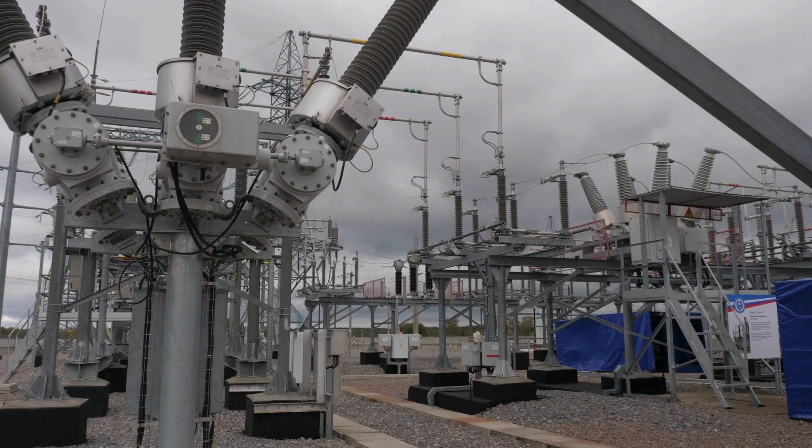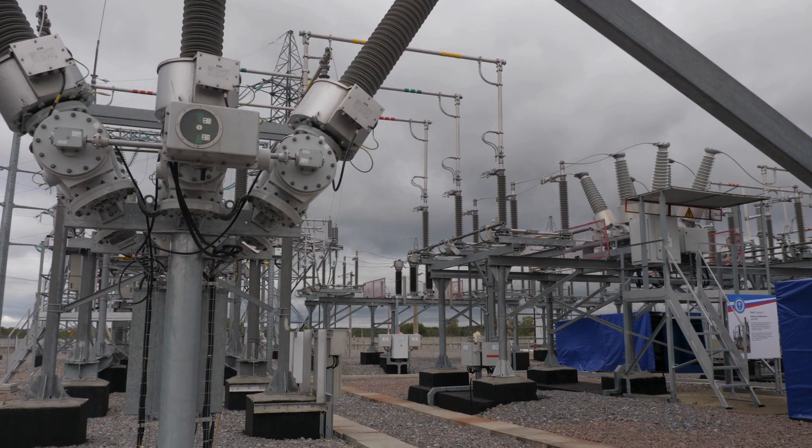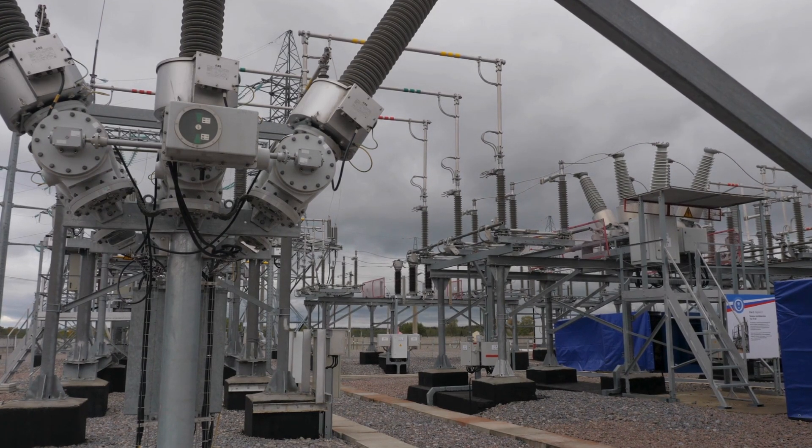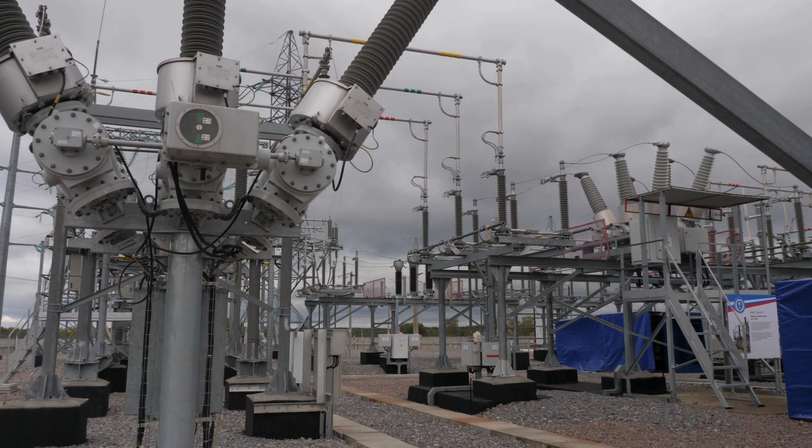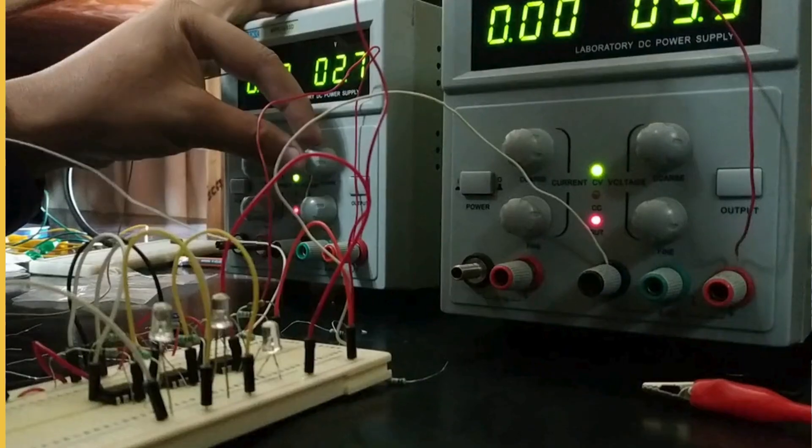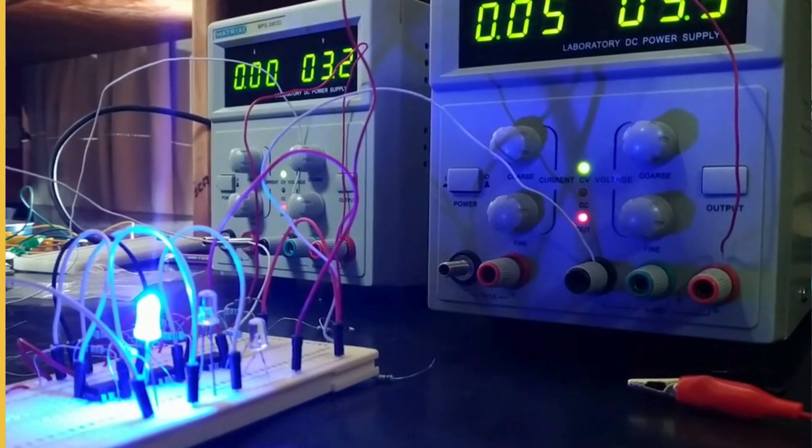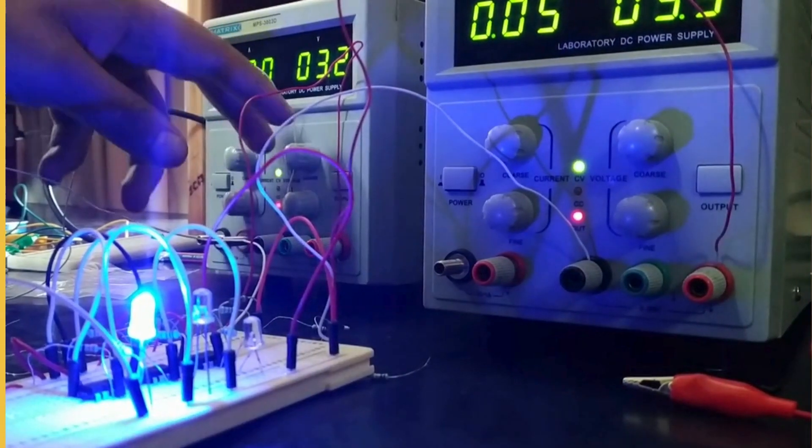Now we are going to see voltage transformation. AC can be easily transformed to higher or lower voltages by using transformers, making it suitable for the power grid, where high voltage is used for transmission and lower voltage is for end use. DC voltage transformation is more complex and requires electronic converters. So voltage transformation is easy in AC as compared to DC.